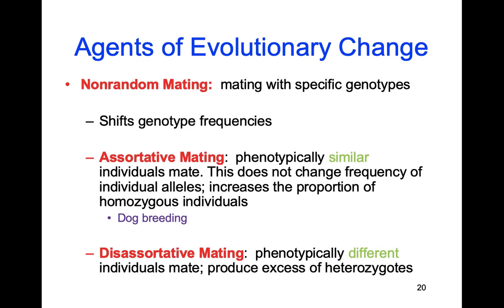There are two different kinds of mating. Assortive mating means phenotypically similar individuals mate — like dog breeding, where you take a golden retriever female and a golden retriever male. It's not going to change gene frequencies, but it will increase the proportion of homozygous individuals. Disassortive mating means phenotypically different individuals mate, producing lots more heterozygotes. Think of mutts — they've got a little bit of this and a little bit of that, all very phenotypically different. That's disassortive mating.